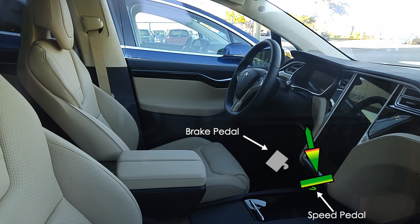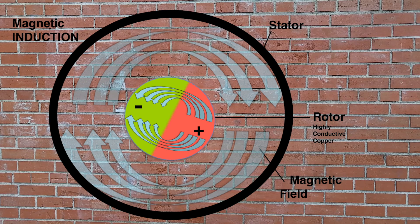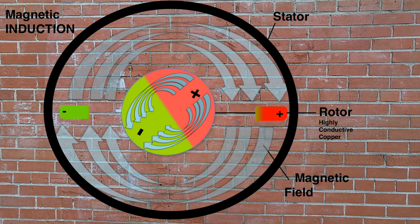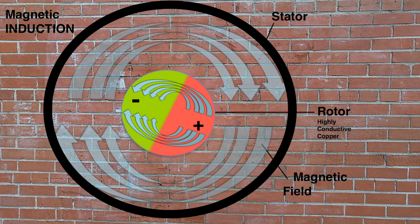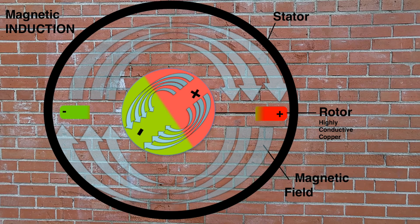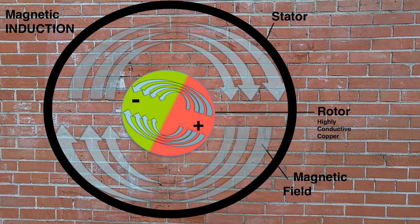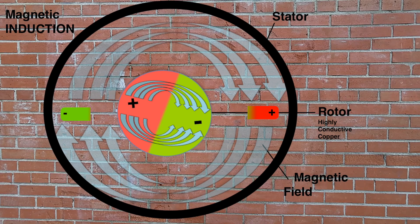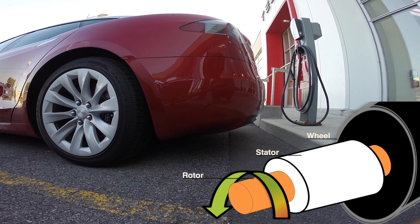When you press on the speed pedal, the inverter sends more voltage, meaning more current, into the stator. Therefore, the magnetic field out of the stator is much stronger. That induces a strong magnetic field in the rotor as well. As long as the magnetic field in the rotor is weaker than the one from the stator, the rotor turns in the same direction as the rotating magnetic field, and therefore turns the wheel forward.